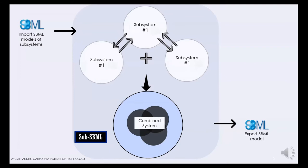Essentially, sub-SBML imports SBML files, as you can see on the left here, and the output of sub-SBML is also an SBML file. This output SBML file is the file you need for a combined model for the whole system. You provide a list of different SBML files for different kinds of subsystems, model the interactions between those subsystems, and get a combined system. You can export the SBML file out. We will be using BioCompiler to generate SBML files of different subsystem models and BioScrape to simulate the combined output SBML file.